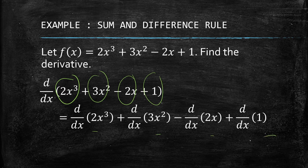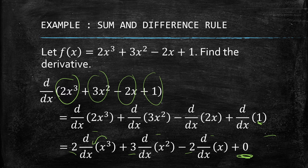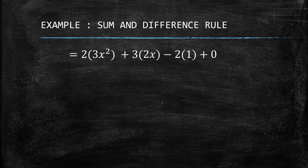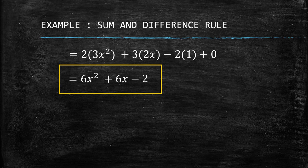We can apply the constant multiple rule to take out each coefficient. The derivative of the constant 1 is zero. Using the power rule, the derivative of x³ is 3x², and the derivative of x² is 2x. The derivative of x is just 1. So we get 2·(3x²) + 3·(2x) − 2·(1) + 0, which simplifies to 6x² + 6x − 2. That's how you use the sum and difference rules.